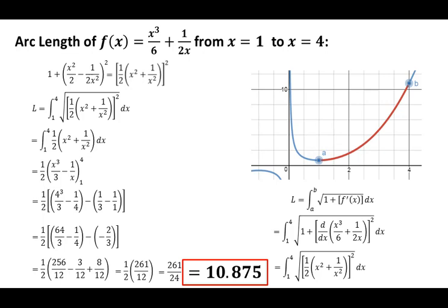If you're familiar with the previous video, you know this is the same value we found when we separated this arc length into 100 segments. We can see we're on the right track, and our integration process successfully found the arc length of the red segment shown in the plot.